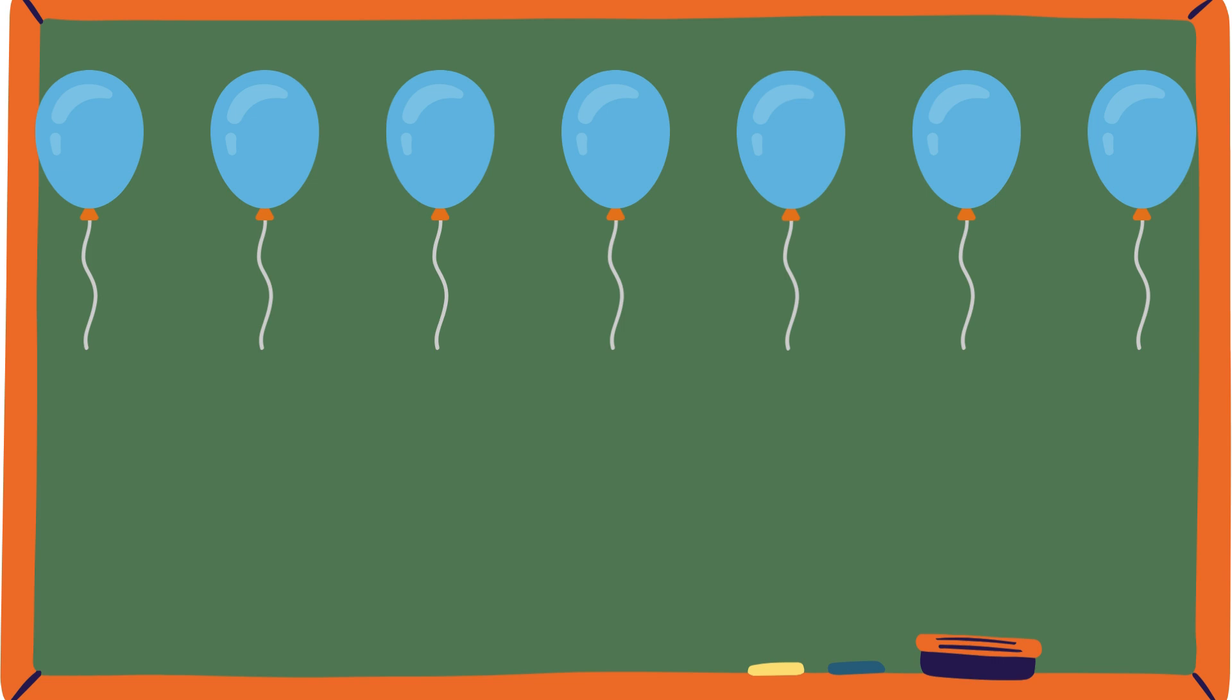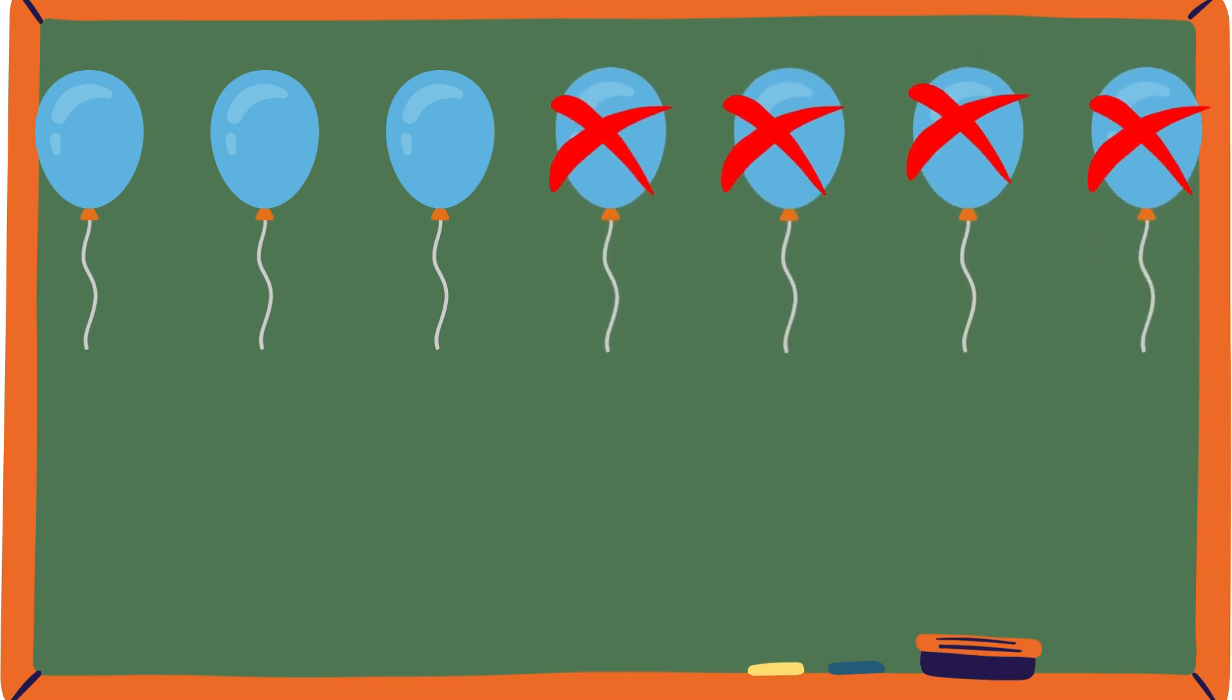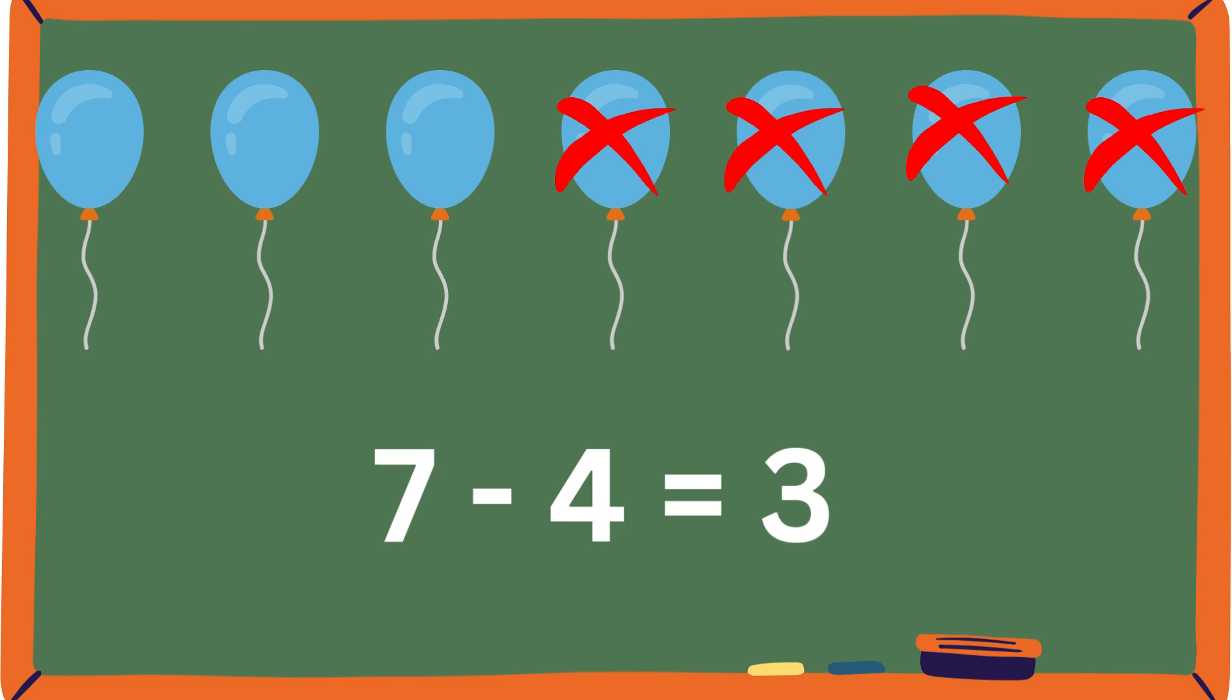Some more blue. 1, 2, 3, 4, 5, 6, 7. So there are 7 balloons. 4 get popped. How many balloons are left? If you said 3, that's the answer. Good job. This is the equation. 7 minus 4 equals 3.